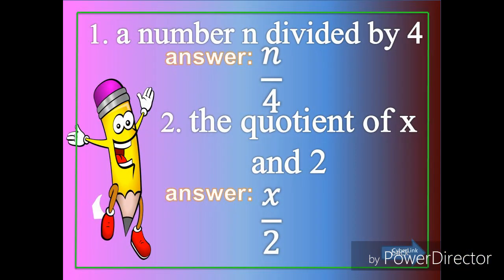Next, a number n divided by 4. So in this example, we're going to use the symbol of division because of the word divided by. So a number n, which is letter n, over 4. So n over 4, or n divided by 4.